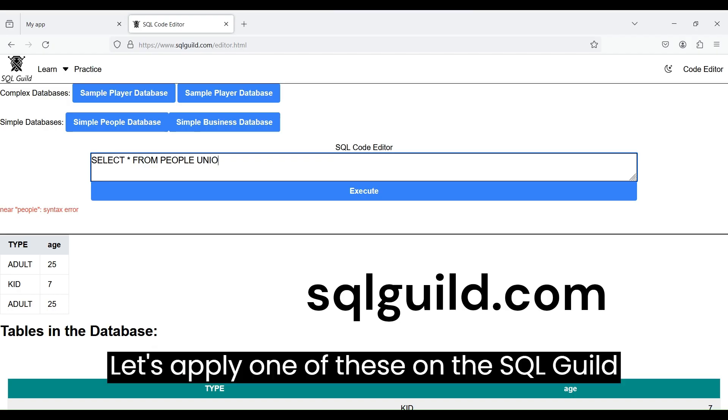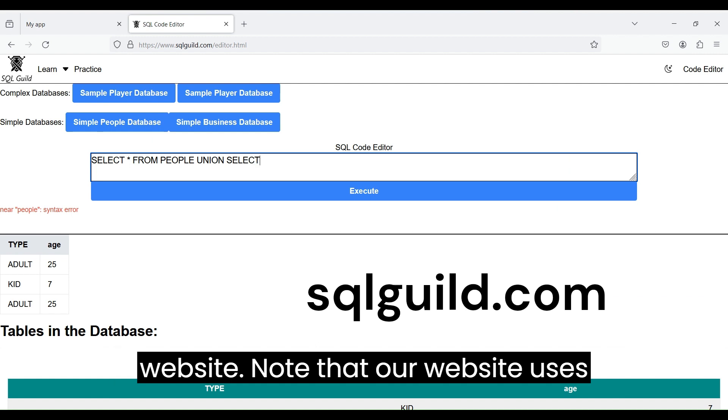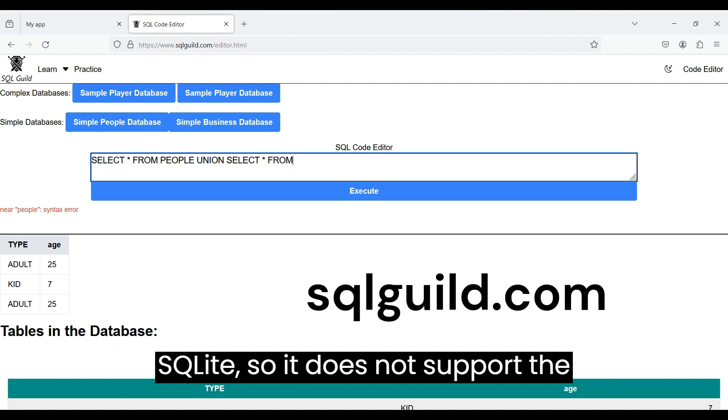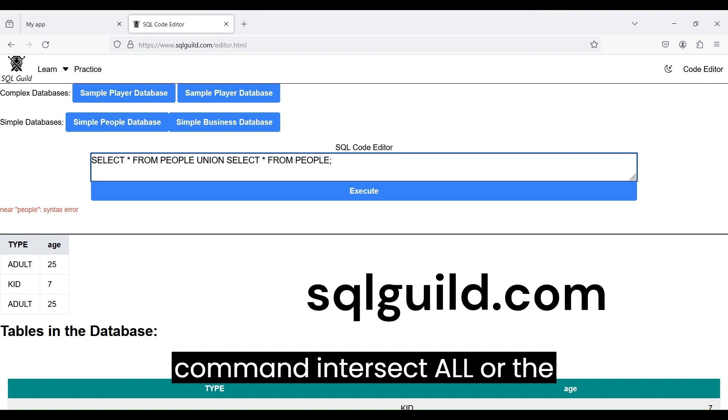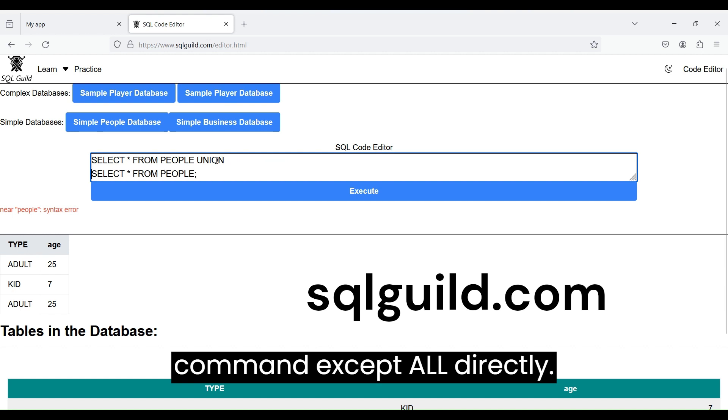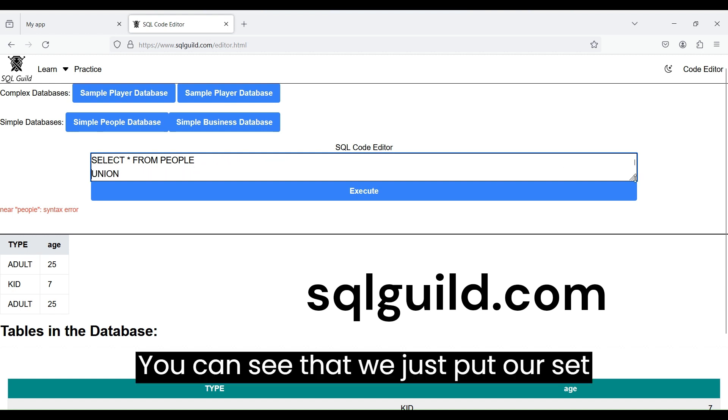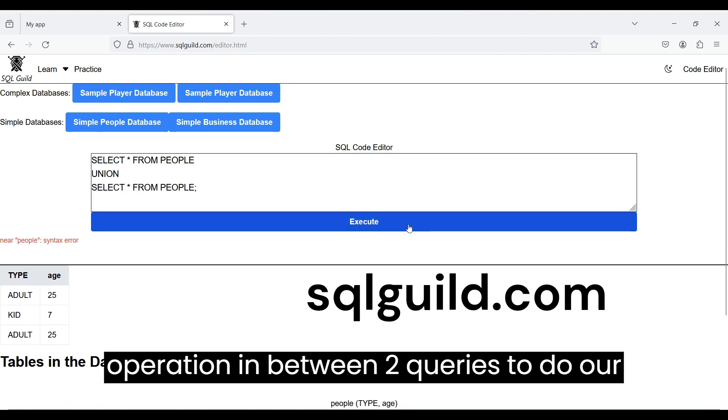Let's apply one of these on the SQL Guild website. Note that our website uses SQLite, so it does not support the command INTERSECT ALL or the command EXCEPT ALL directly. You can see that we just put our set operation in between 2 queries to do our set operations.